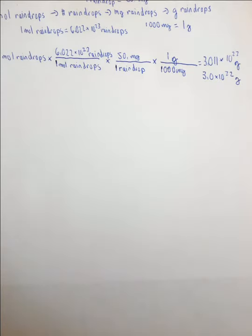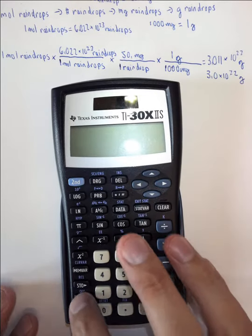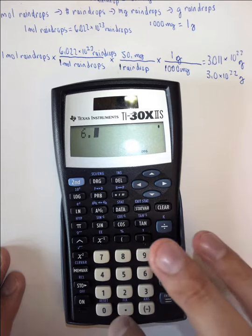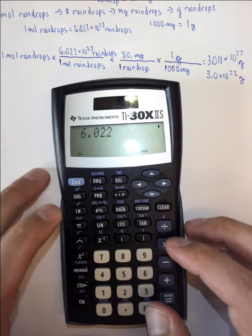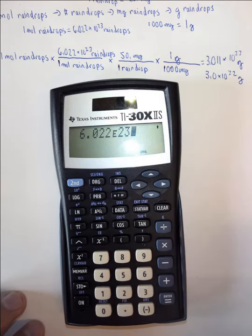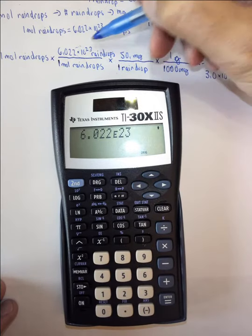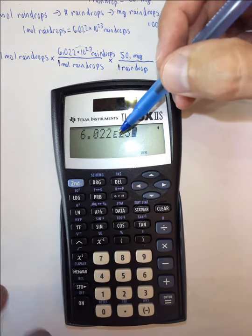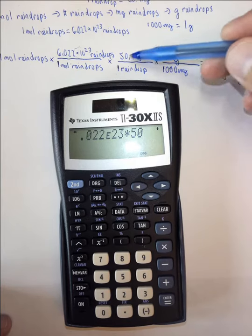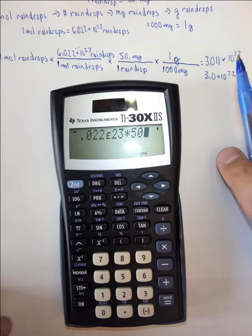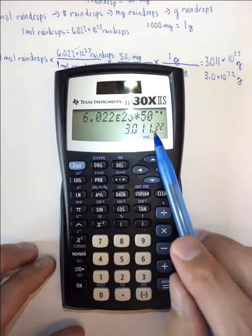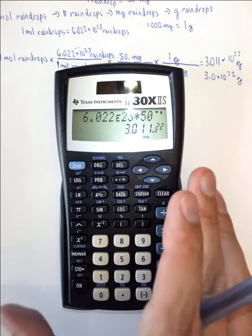I want to repeat this using a Texas Instruments calculator — these are the two most popular, so these are the ones I'd like to show you. On a TI calculator, type 6.022, then hit the second button and the EE key, which puts an E on the screen. Notice only one E appears — that represents the times-10 part — and then enter 23. So you get 6.022 second-EE 23. Then multiply by 50 and divide by 1000. Hit enter and you get 3.011 times 10 to the 22 — the same result.